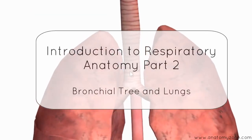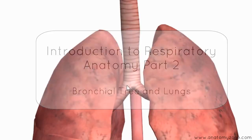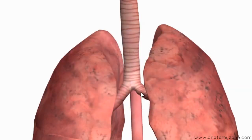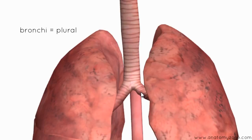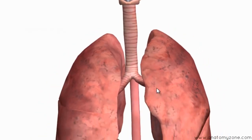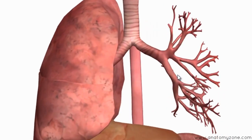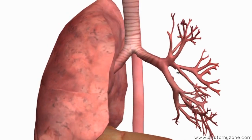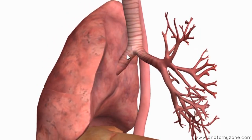The trachea splits into two — a right and a left primary bronchus. Bronchi is plural and bronchus is singular. I'll just remove one of the lungs so we can take a look at the bronchi. The place where the bronchus enters the lung is known as the hilum, and at the hilum there are a couple of other structures which enter the lung.